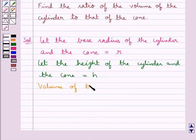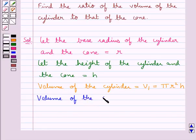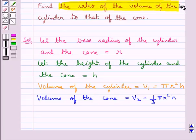Volume of the cylinder V₁ is given by πR²H. Let's consider volume of the cone V₂ is given by 1/3 πR²H. We have to find the ratio of the volume of the cylinder to that of the cone.